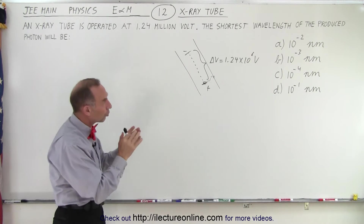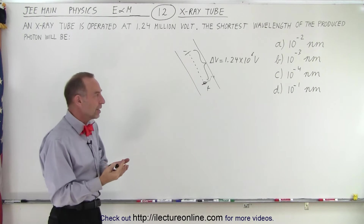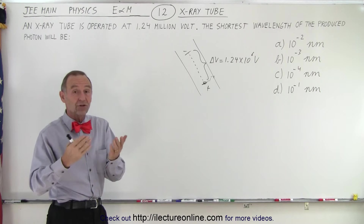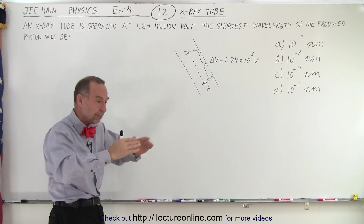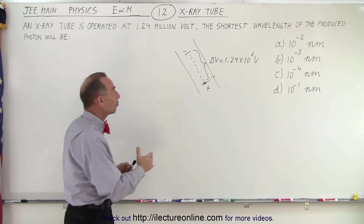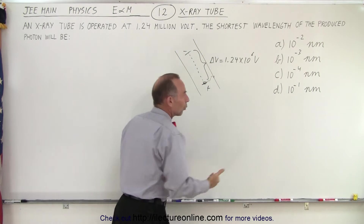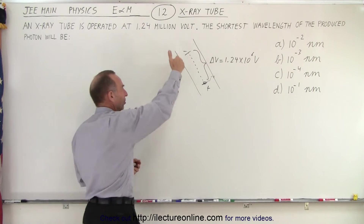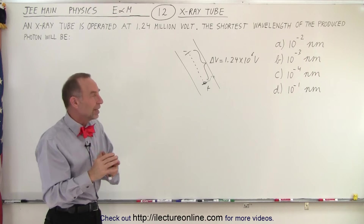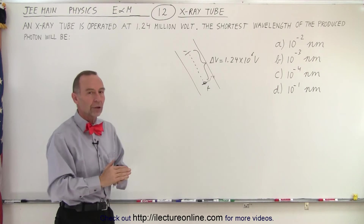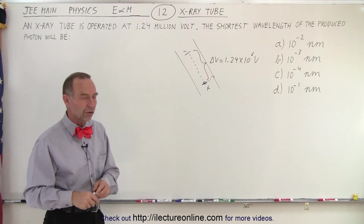The shortest wavelength produced means the one with the highest frequency and the most energy. The shortest wavelength means the highest frequency, which means the highest energy. That will be the case when all of this delta V is converted — when all the energy from acceleration across the gap is turned into the photon, 100% of it — that would be the maximum energy contributed to each photon.